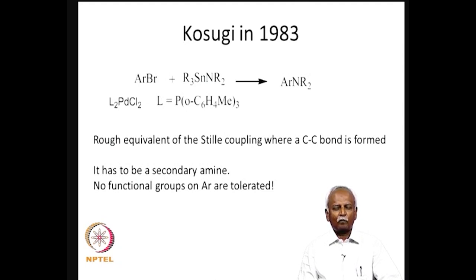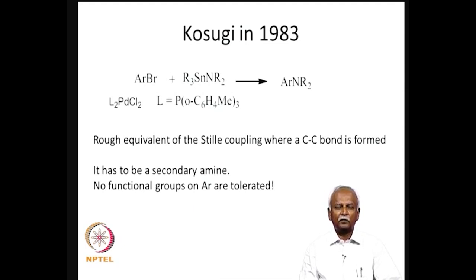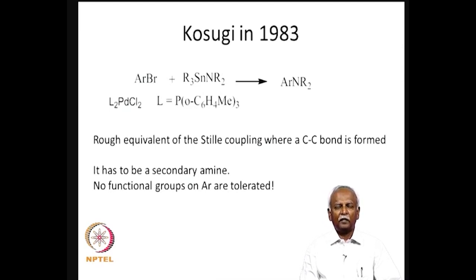In 1983, Kosugi reported a variant of the Stille reaction where an aryl bromide could be coupled with a tin amide. This reaction was catalyzed by palladium chloride with a phosphorus ligand; the oxidation state of palladium was +2, but in the presence of phosphines in the reaction medium, reduction of palladium(II) to palladium(0) was possible. So it would be possible to have a reaction similar to the Negishi or Stille reaction mechanism.